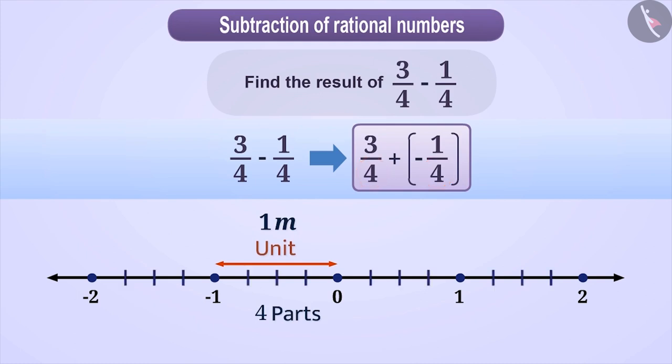we divide each unit of the number line into 4 equal parts and name them as 1/4, 2/4, 3/4 to the right of 0 and on the left -1/4, -2/4, -3/4.